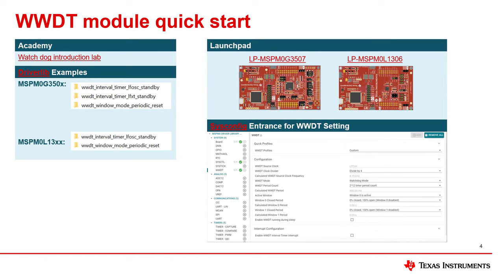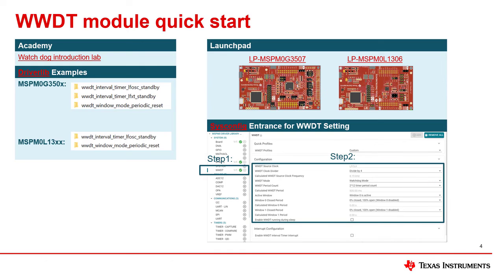To customize the configuration of the watchdog module, we recommend using the SysConfig graphical configuration tool. Follow the steps in the figure: first, navigate in SysConfig to the windowed watchdog timer tab, and then adjust the parameters as shown in step 2. Building the program will initialize the windowed watchdog timer module with the parameters that you set here, shortening production time and speeding up development.